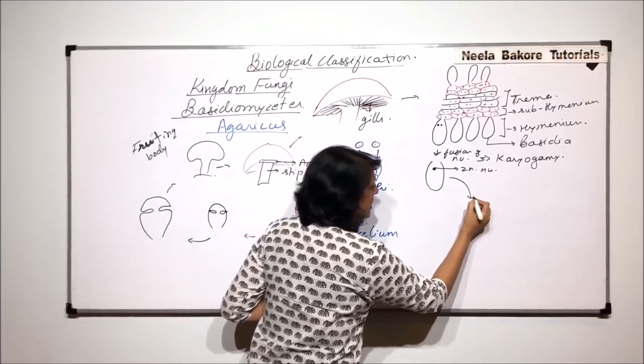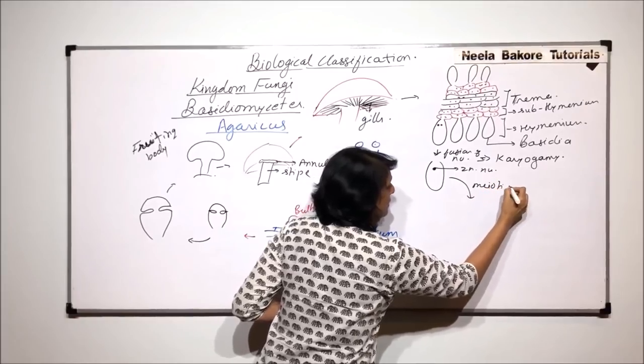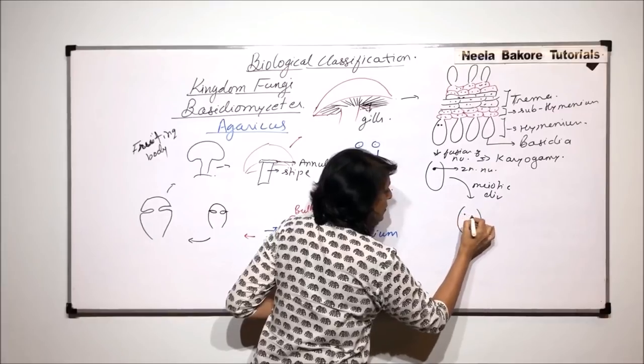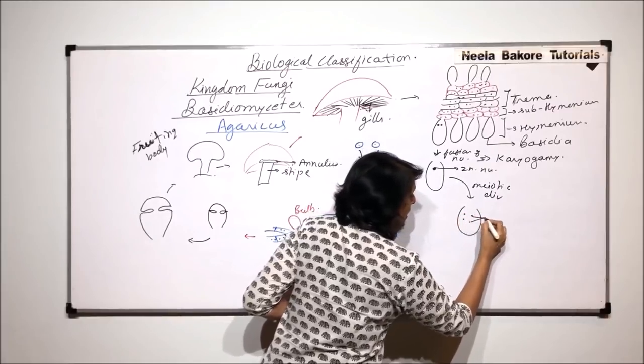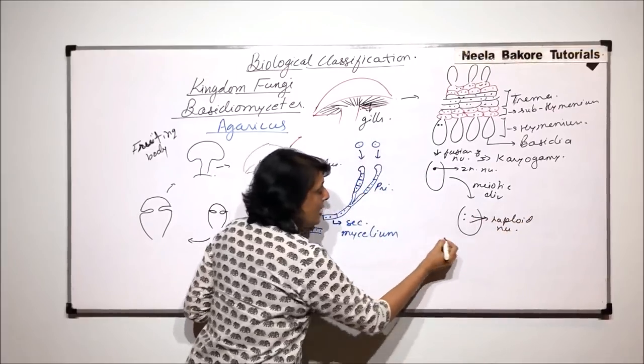This nucleus, it undergoes meiotic division. As a result, in the baesidium, we find one, two, three, four haploid nuclei.